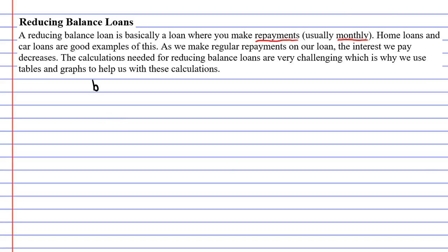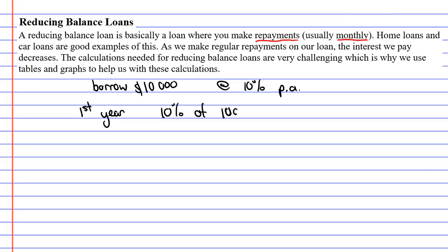Let's say that you want to borrow money for a car. So you borrowed $10,000, and you borrow this at an interest rate of 10% per annum. After one year, at the end of the first year, they're going to charge you some interest. They're going to charge you 10% of $10,000, which comes out to $1,000.